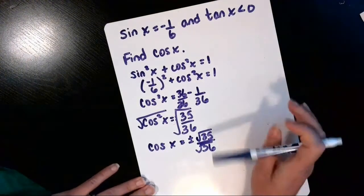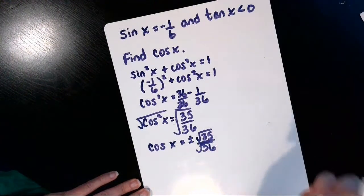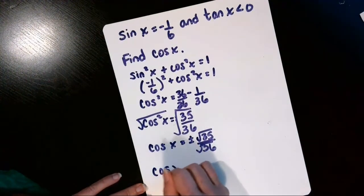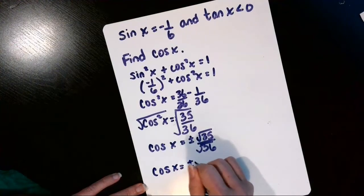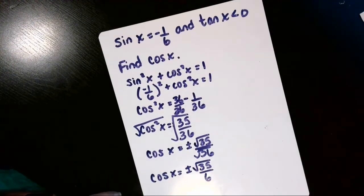So the square root of 35, that doesn't reduce. That's 5 times 7. The square root of 36, though, that does reduce. So cosine of x is plus or minus square root of 35 over 6.